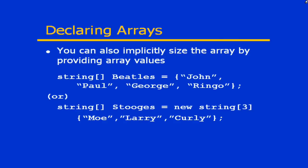You can also implicitly size an array by providing the values at the point the array is declared. In the first example, I have a string array called beetles — you'll notice the values are indicated in curly braces. There are going to be four elements numbered 0 to 3. Notably, nowhere did I use the new keyword nor explicitly state four elements; because we assigned those values, the element count becomes implicitly sized. If you want to use the constructor and still assign initial values, you can — as in the second example with a string array called stooges, initialized with new string[3] and values Moe, Larry, and Curly.